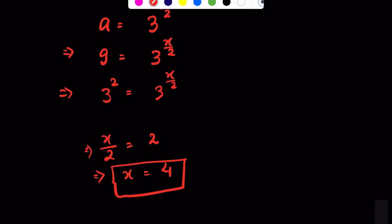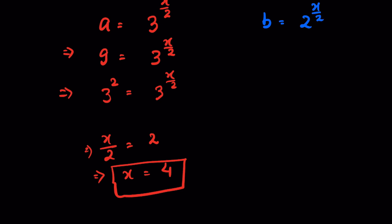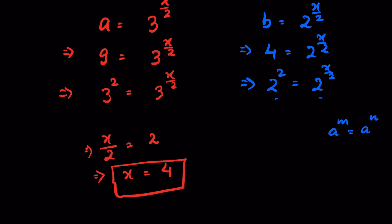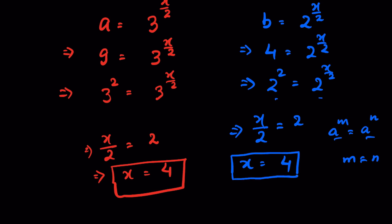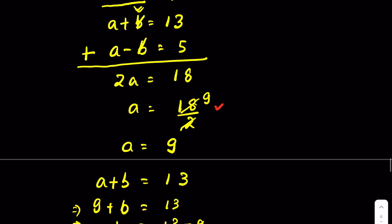We can also find x from b. We defined b = 2^(x/2) and found b = 4. Writing 4 as 2², we get 2² = 2^(x/2). Since both bases are the same — and when a^m = a^n then m = n, provided a ≠ 0 or 1 — we get x/2 = 2, so x = 4.